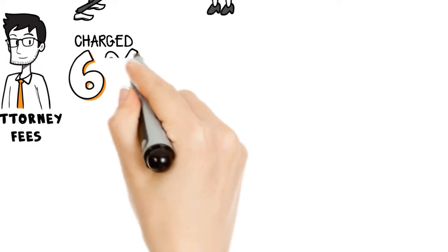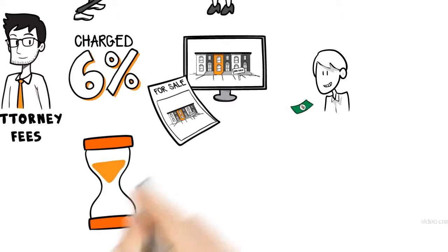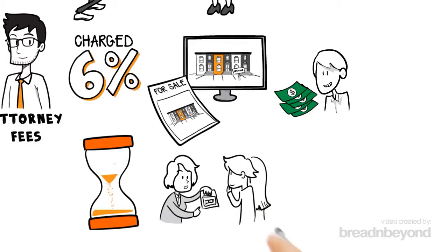Traditionally, real estate agents have charged 6% of your home price to cover marketing and advertising costs, commission for the buyer's agent, and your agent's time and expertise to help you price your home right.